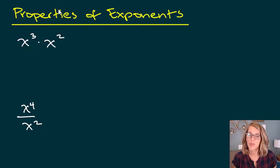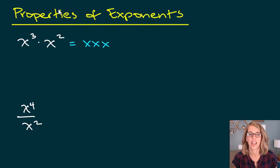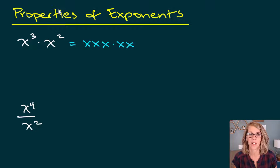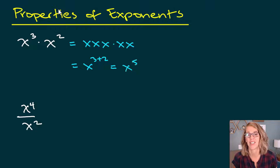I've got x cubed times x squared. That power literally means that there are three of them being multiplied, and there are another two of them being multiplied. I can count these up — there are five of them — or we can use the property that says to add those exponents, and we get x to the fifth.